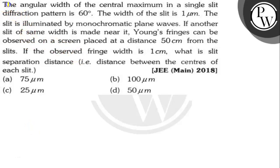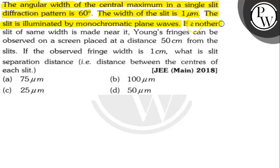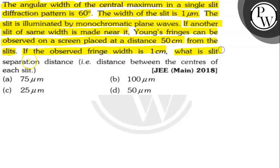The angular width of the central maximum in a single slit diffraction pattern is 60 degrees. The width of the slit is 1 micrometer, and the slit is illuminated by monochromatic plane waves. If another slit of the same width is made near it, Young's fringes can be observed on a screen placed at a distance of 50 cm from the slits. If the observed fringe width is 1 cm, what is the slit separation distance — that is, the distance between the centers of the slits?